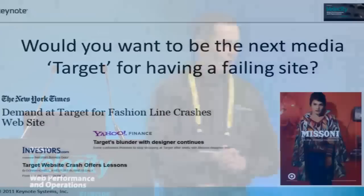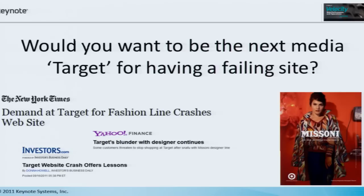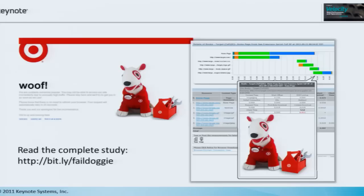Pretty much most of you are aware of the recent outage that Target had. They basically introduced some high-end fashion lines and put them on their website for a few bucks. The American public liked a bargain, so they went out and tried to snap up a few of these items and brought the site crashing down to its knees. We followed this very closely at Keynote. We monitored it for the whole time that the site was down, and it was down for well over 24 hours. We've written a complete blog post — you can follow the Bitly link. It basically highlighted the fact that you can never fully prepare for what your customers are going to bring to your site, so there should have been a lot more load testing to meet the demand.